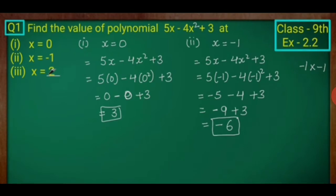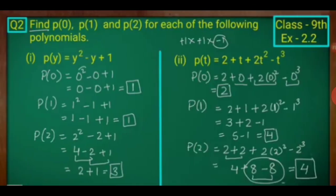Third part, at x equals to 2. Question number 2: find p(0), p(1), p(2) for each of the following polynomials. We will find out these values by putting 0, 1, and 2 in place of the variable.